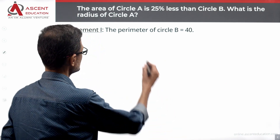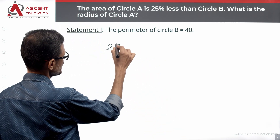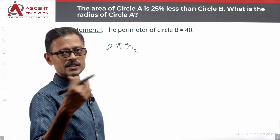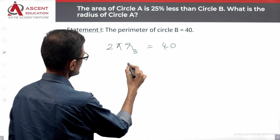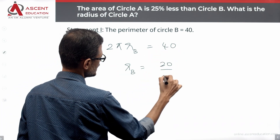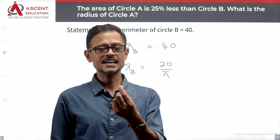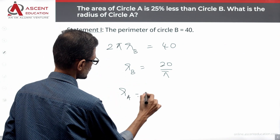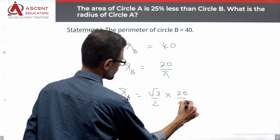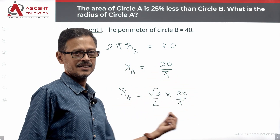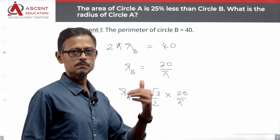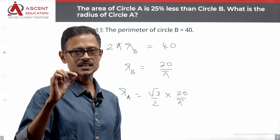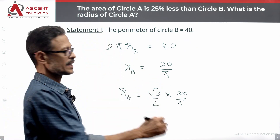Statement 1: the perimeter of circle B is equal to 40π. The perimeter (circumference) of circle B is 2π × Rb = 40π, so Rb = 20/π. Substituting into our formula: Ra = (√3/2) × (20/π). Simplifying gives a unique answer — Ra = (20√3) / (2π). Using π ≈ 3.14 or 22/7, we get a unique value for the radius of circle A.